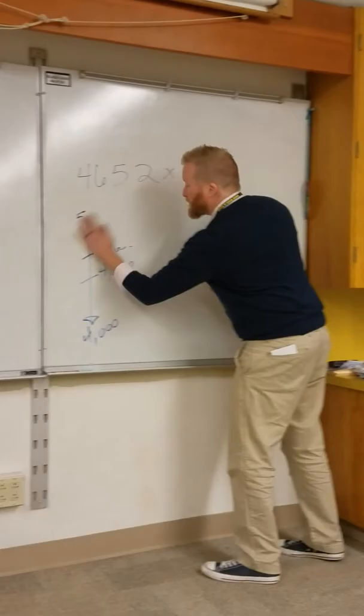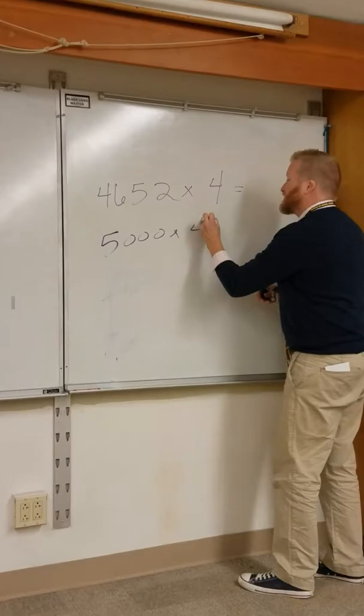This helps them because if I round to the nearest thousand, okay, here is 5,000.